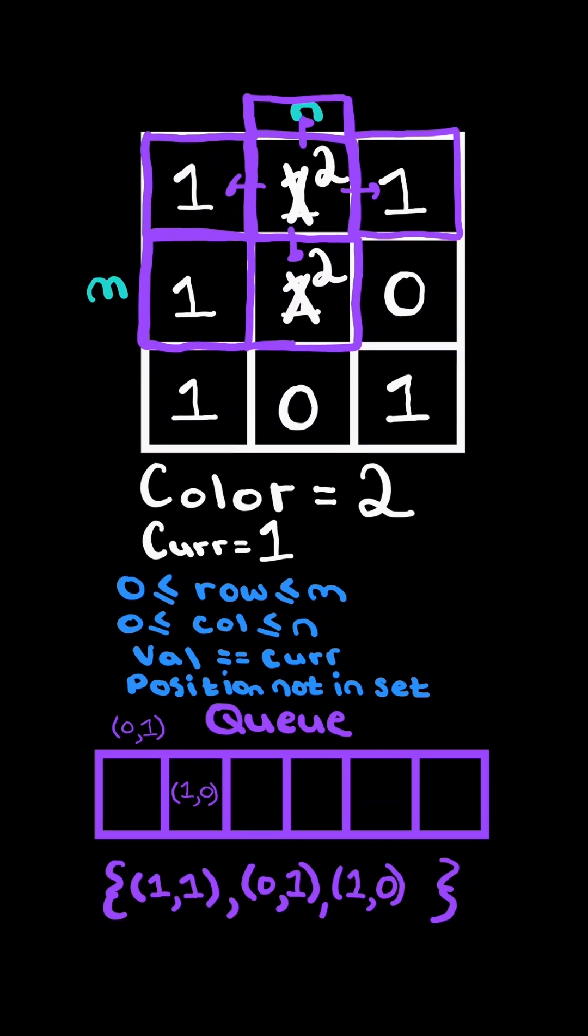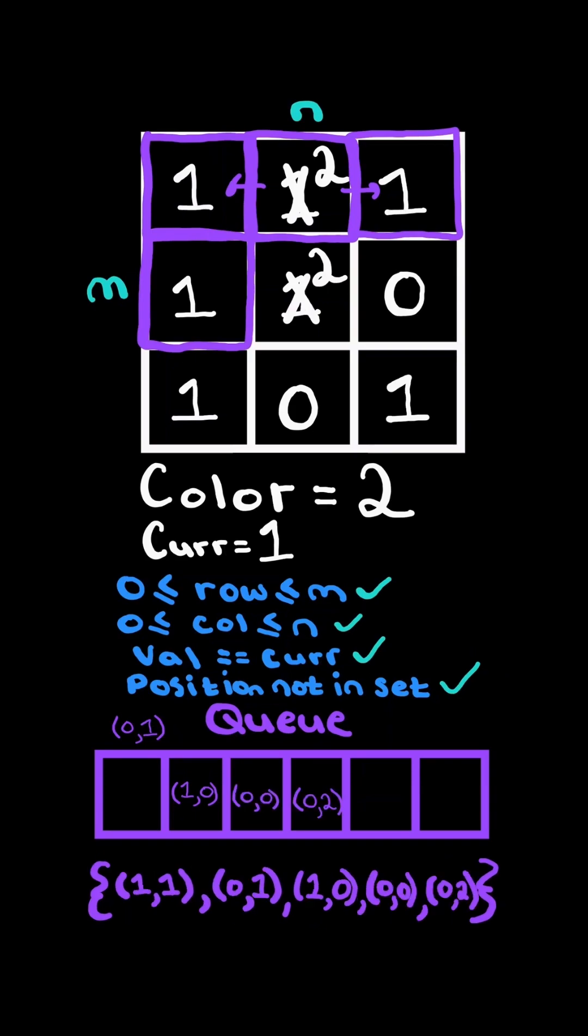Notice the top position is outside the row length, so we don't consider it. The bottom position is already in the set, so we have seen it before and we do not consider it. The only positions that satisfy all the four conditions are the left and right. So we append those positions to the queue and add those positions to the set.